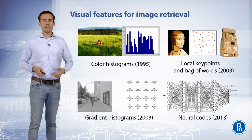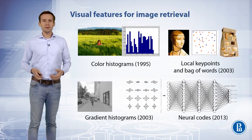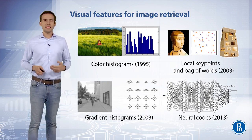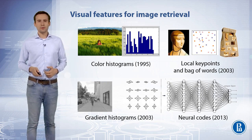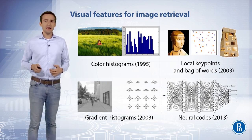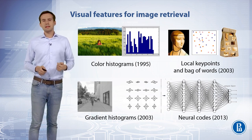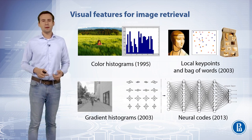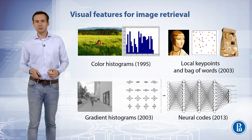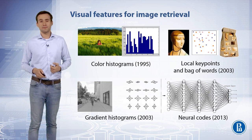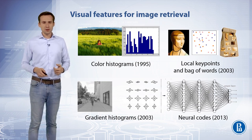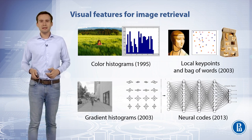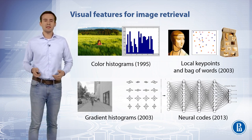To search for a target image one first needs to compute its semantic representation from raw pixel values. Virtually every approach to computing features for image classification and recognition has been applied to image retrieval too. Starting from basic color histograms, the research then went on to using gradient histograms such as HOG or SIFT. Not surprisingly, features extracted from deep convolutional neural networks have recently gained attention as an effective image representation.